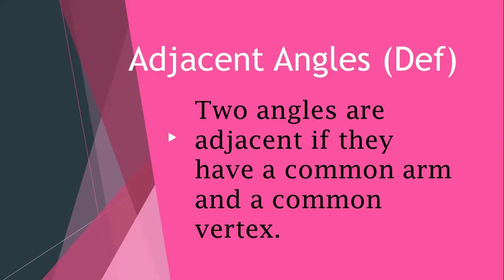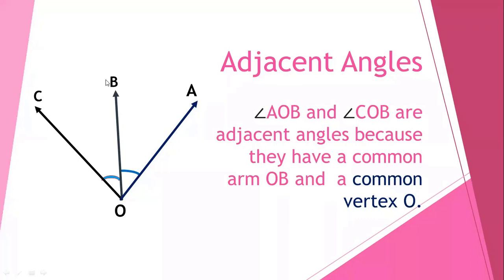Let's see what adjacent angles look like. In this figure, we can see that these are adjacent angles. Why? Because they have one common arm, OB, and one common vertex, which is O. It satisfies the definition of adjacent angles — a common arm OB and a common vertex O. So we can see that angle AOB and angle COB are the adjacent angles.